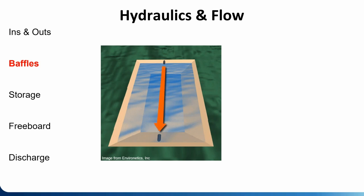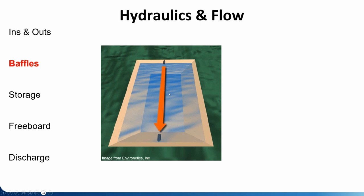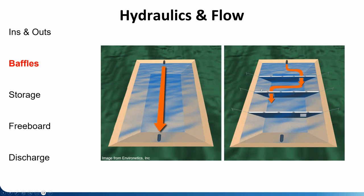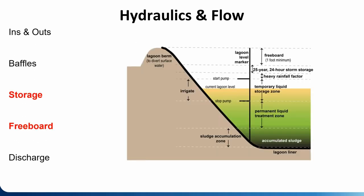Baffles are another way to address short-circuiting. Water takes the path of least resistance — it wants to go straight for the exit, not wind through every aisle like at IKEA or Aldi. Baffles force the water to take a tortured path, which means it utilizes more of the cell and hangs on to the waste longer instead of going straight for the exit. A baffle is a great way to get more treatment out of the lagoon system and control the flow — this is called plug flow. We're forcing the water to travel in a tortured fashion through the lagoon system.